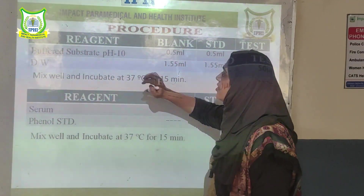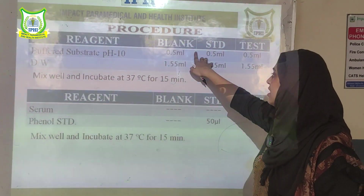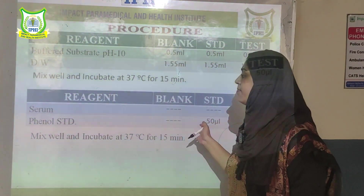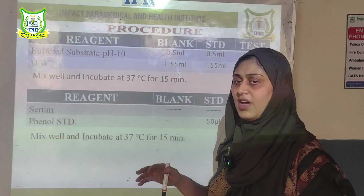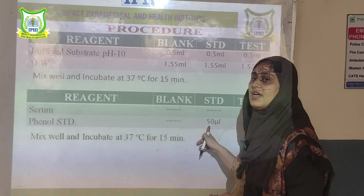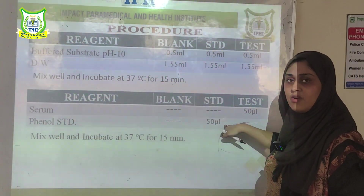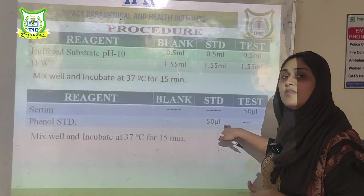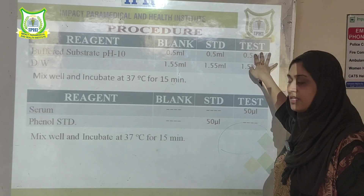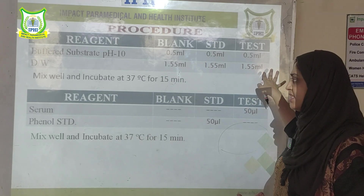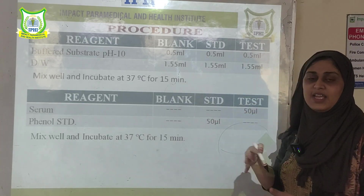The procedure uses three tubes: blank, standard, and test. In the blank, all reagents are added but no serum and no standard — this corrects for errors in measurement. The standard contains a known phenol concentration so we know the reference amount. The test contains all reagents plus serum, so we can measure how much enzyme is present.